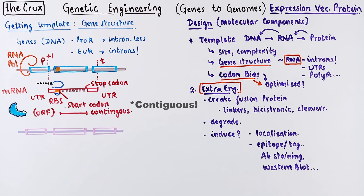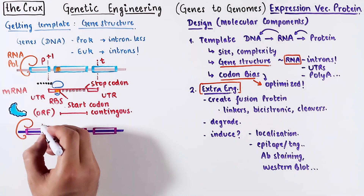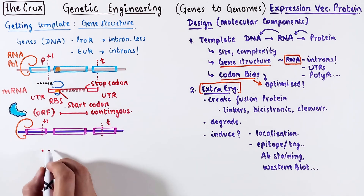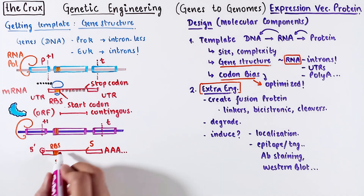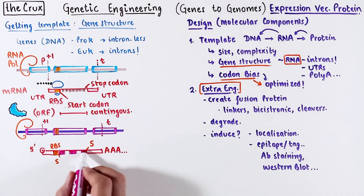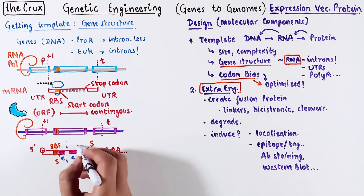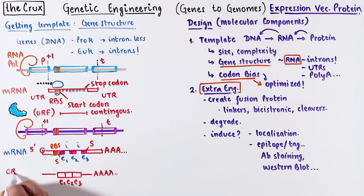A eukaryotic gene has quite similar features: a promoter to start transcription and a terminator to stop it. The mRNA has a few extra bells and whistles. In its raw form, the mRNA is interrupted by introns. Through complex transcriptional processing, all the interrupting parts are removed, and only then do you get the final mRNA. This mature RNA has the contiguous ORF, which gets translated into a protein.